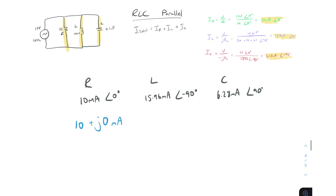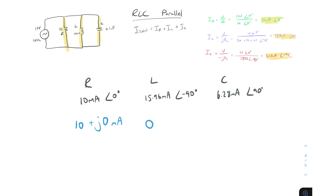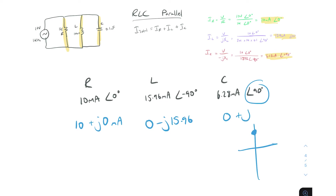The resistor current is 10 plus j0. For the inductor at minus 90 degrees, it's fully down the imaginary axis, so it's zero real part and minus j15.96. For the capacitor at plus 90 degrees, it's fully up the imaginary axis: zero real part and plus j6.28. That completes the conversion back to rectangular form.